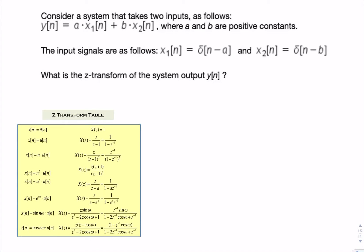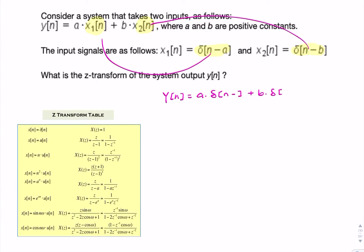In this question, we're asked for the z-transform of the output of a system that takes two inputs, x1 and x2. We're actually given x1 and x2, so the question is really easier than it looks. If we simply plug x1 and x2 in, we can rewrite the output as a times an impulse at n equals a, plus b times an impulse at n equals b.